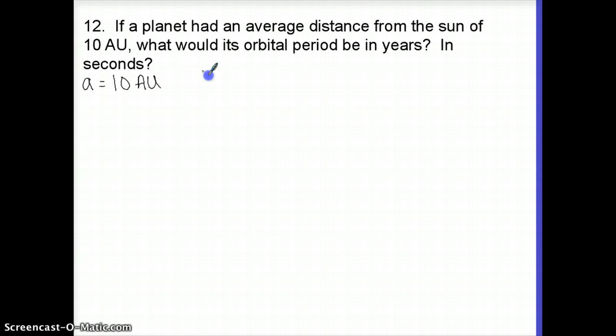We're going to be solving for the period, and since we know it's orbiting the Sun our M1 is going to be equal to the mass of the Sun which is 2 times 10 to the 30 kilograms. We're going to ignore M2 because whatever this planet is we'll assume that is much less massive than the Sun so we're just going to ignore that.